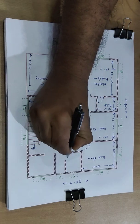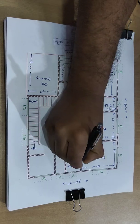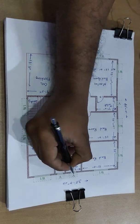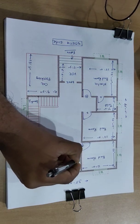And common toilet. Size, common toilet, 5 feet and 6 feet 7 inch.